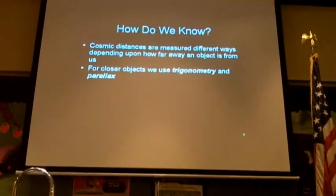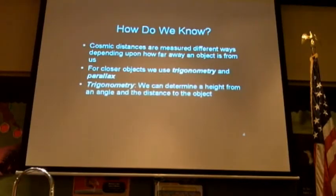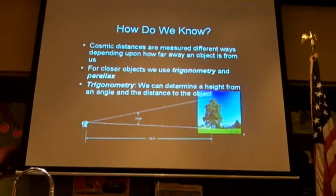So for closer objects, we use trigonometry. Just plain old trigonometry. You've seen the guys on the side of the road with the transit, and another guy's down the road with a stick. They're measuring distance using trigonometry in that little telescope he's looking through. You can use trigonometry to measure some stellar distances, but not real far.